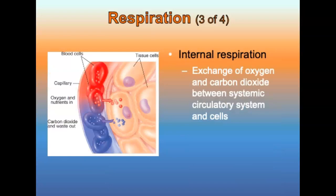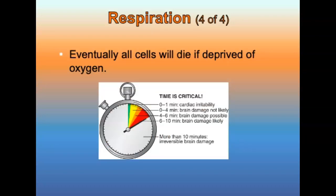Internal respiration is the exchange of oxygen and carbon dioxide between the systemic circulatory system and the cells of the body. Oxygen passes from blood in capillaries to tissue cells; carbon dioxide and cell waste pass from cells into capillaries, where they are transported via the venous system back to the lung. All cells need a constant supply of oxygen to survive. Between 0 and 1 minute, cardiac irritability occurs. Zero to four minutes, brain damage is not likely. Four to six minutes, brain damage is possible. Six to ten minutes, brain damage is very likely. More than ten minutes, irreversible brain damage occurs.